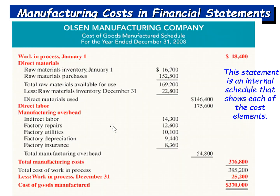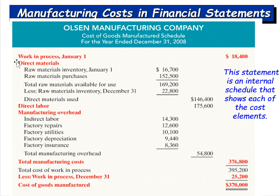Here's what a cost of goods manufactured schedule looks like. Start with beginning work in process — what was started into production but not yet completed — for example, $18,400. Add direct materials, direct labor, and manufacturing overhead to get total manufacturing costs: $376,800. Then add beginning WIP, add total manufacturing costs, and subtract ending work in process to get cost of goods manufactured. A memory tip: the word 'manufactured' starts with 'man,' so remember — cost of goods manufactured always starts with beginning WIP, add total manufacturing costs, subtract ending WIP.